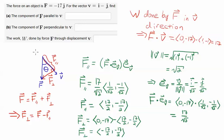All right, next, we're asked for the work done by the force F through displacement V. So I think of that as a work done by F in the V direction, and that just simply is F dot V. So I just dot F and V, and I get 17.